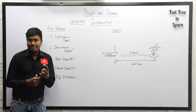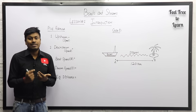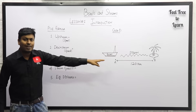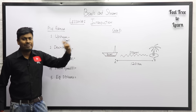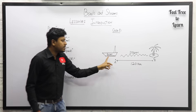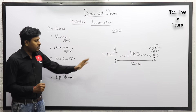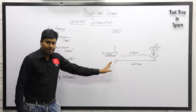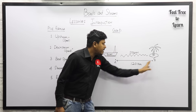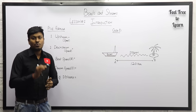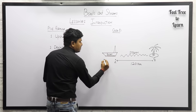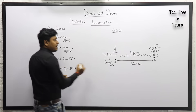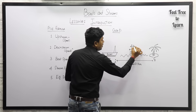There are two cases: upstream and downstream. This topic deals with boats and streams — sometimes called a river or still water. Let's take an example: assume there is an island, and the total distance from the starting point to the island is 120 kilometers. The boat speed is 60 km/h and the stream speed is 40 km/h.